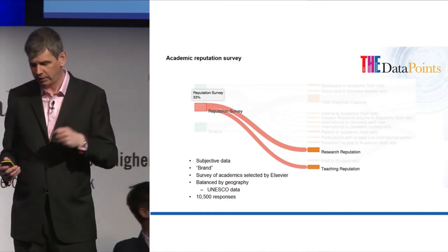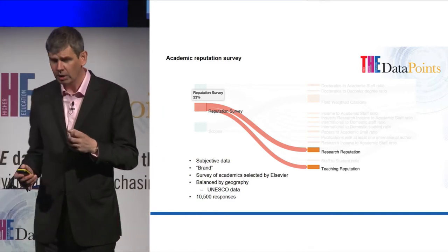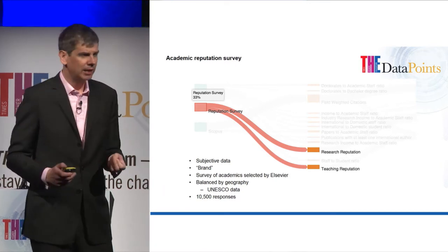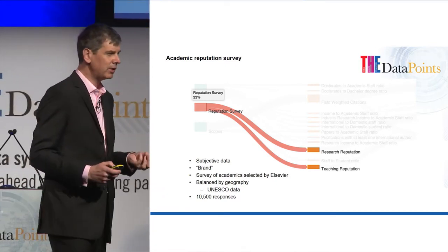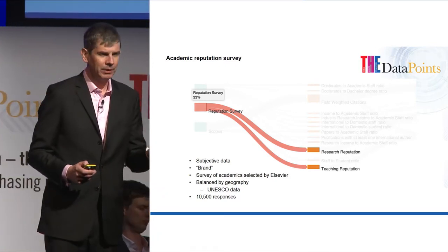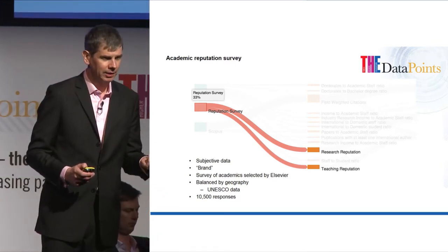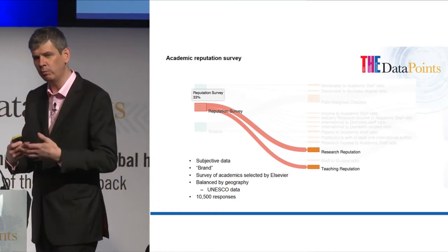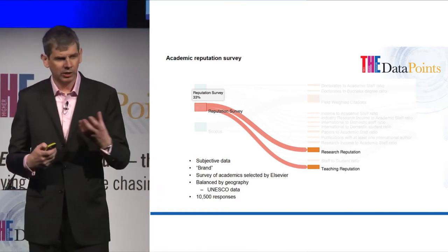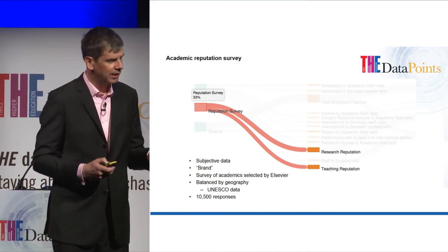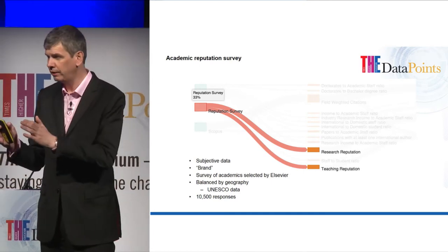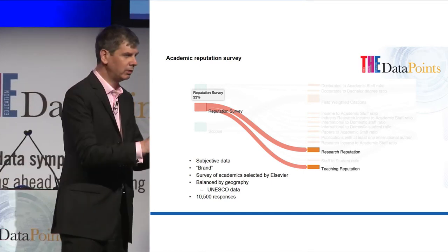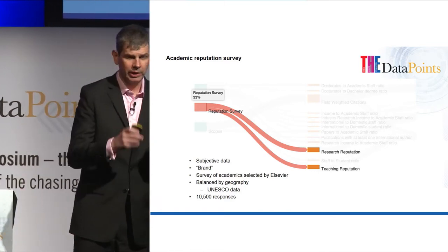This year we received 10,323 responses, and people voted for over 2,500 different institutions. For the first time, we had a vote for the Antarctic Research Institution, so we can genuinely claim we've had votes for all seven continents. We're also asking academics to tell us who they think the best universities are in their particular subject, which gives us another way of analyzing the data — we can see if a particular university is strong in physics, biology, or German literature.